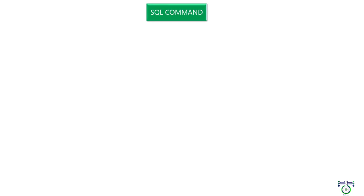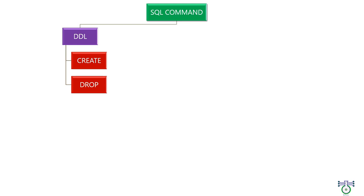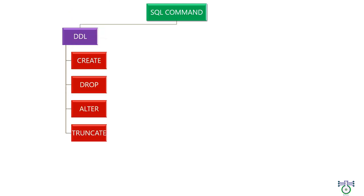In MySQL there are 5 types of SQL commands you can use to interact with a database: DDL, DQL, DML, TCL, and DCL. DDL stands for Data Definition Language, which is used to define and modify the structure of database objects such as tables, indices, and constraints. DDL commands include CREATE, ALTER, RENAME, TRUNCATE, and DROP. For example, you can create a new table in MySQL using the CREATE TABLE command.